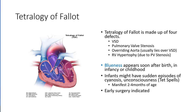Then there's tetralogy of Fallot, which is made of four separate conditions that simultaneously occur: a ventricular septal defect, pulmonary valve stenosis, an overriding aorta that falls over the VSD, and right ventricular hypertrophy due to the pulmonary stenosis. Pulmonary stenosis means the pulmonary valve doesn't open well, creating resistance to flow. With the overriding aorta, you get some blood from the right side entering the aorta.